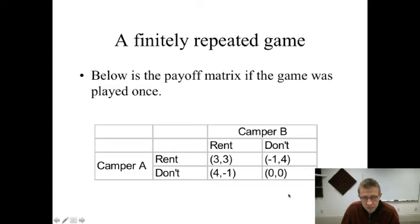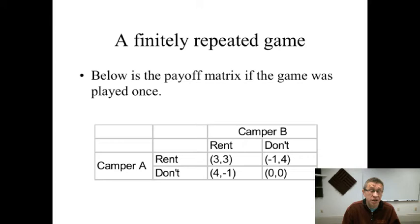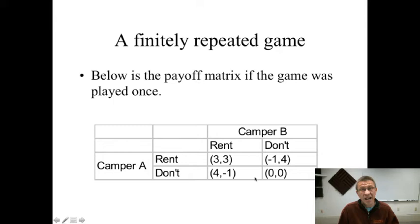If the game is played once, what happens? If they both rent, the payoff is three each — they pay five, get four from each video rented, so two videos are rented for a total payoff of eight, minus the $5 cost, giving a value of three each. If neither rents, just a value of zero. If one rents and the other doesn't, the one who rents loses value because the rental costs $5 but only gets $4 back. But the one who doesn't rent gets $4 in value for nothing.